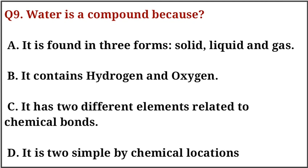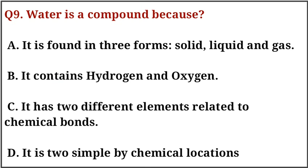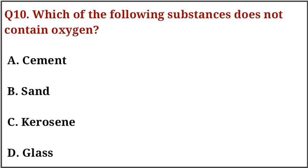Question number nine: water is a compound because... The correct answer is option number C, because it has two different elements related to chemical bonds. Question number ten: which of the following substances does not contain oxygen? The correct answer is option number C, that is kerosene.